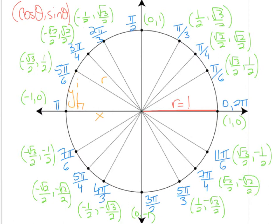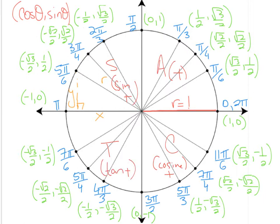If you recall from grade 11, we learned something called the CAST rule. In the fourth quadrant, cosine is positive. In the first quadrant, everything is positive. In the second quadrant, sine is positive. And in the third quadrant, tan is positive. This makes sense because in the third quadrant, tan equals sine over cosine — both are negative, and a negative divided by a negative is positive. In the fourth quadrant, cosine is positive because x is positive there, but sine is negative.